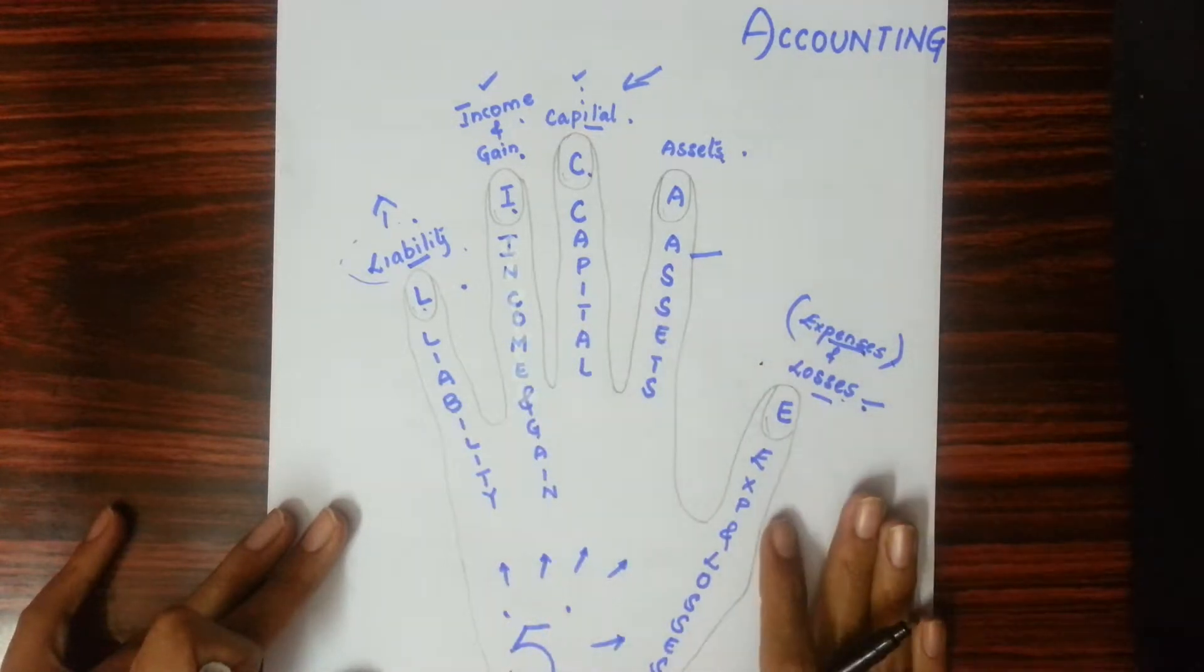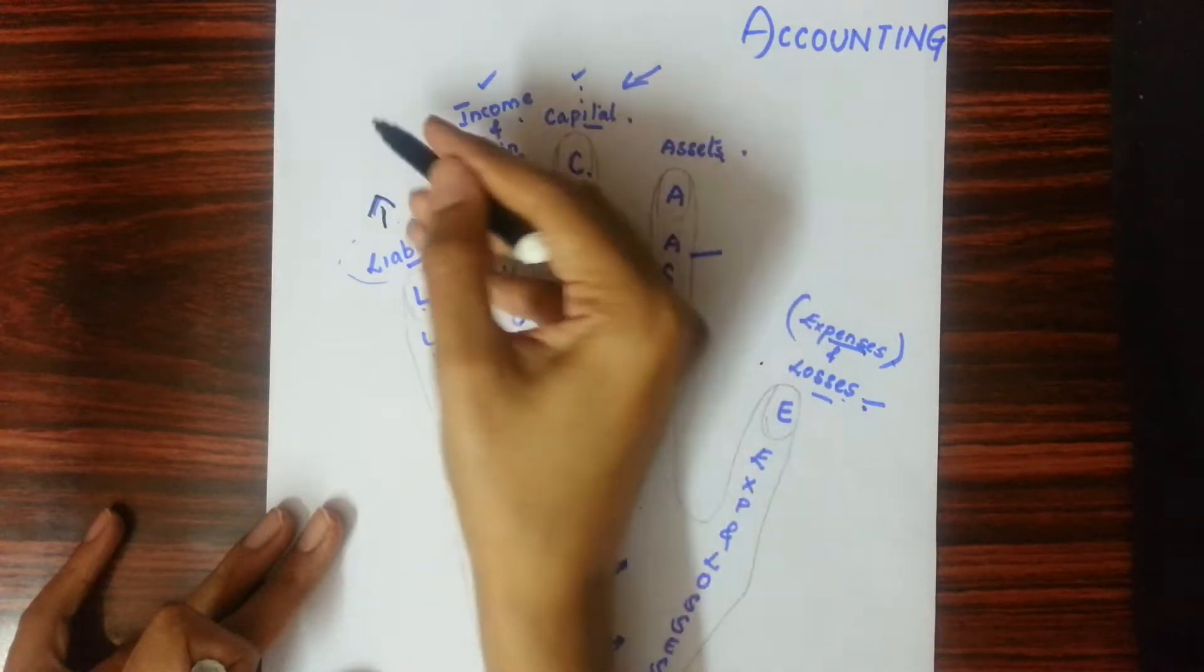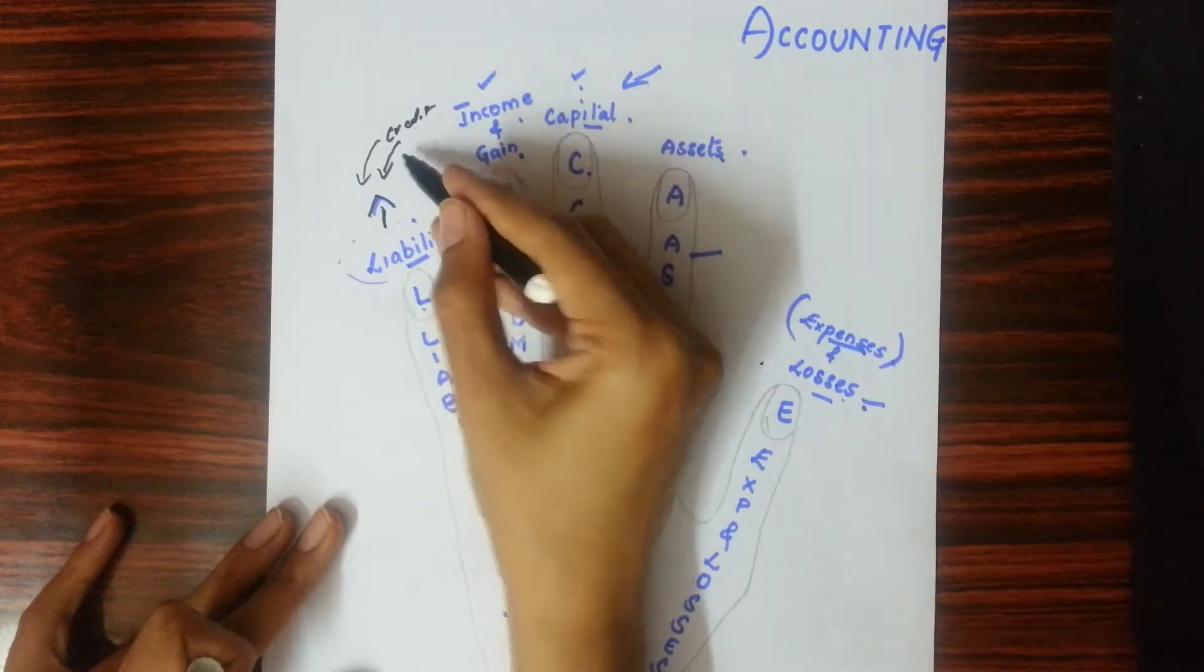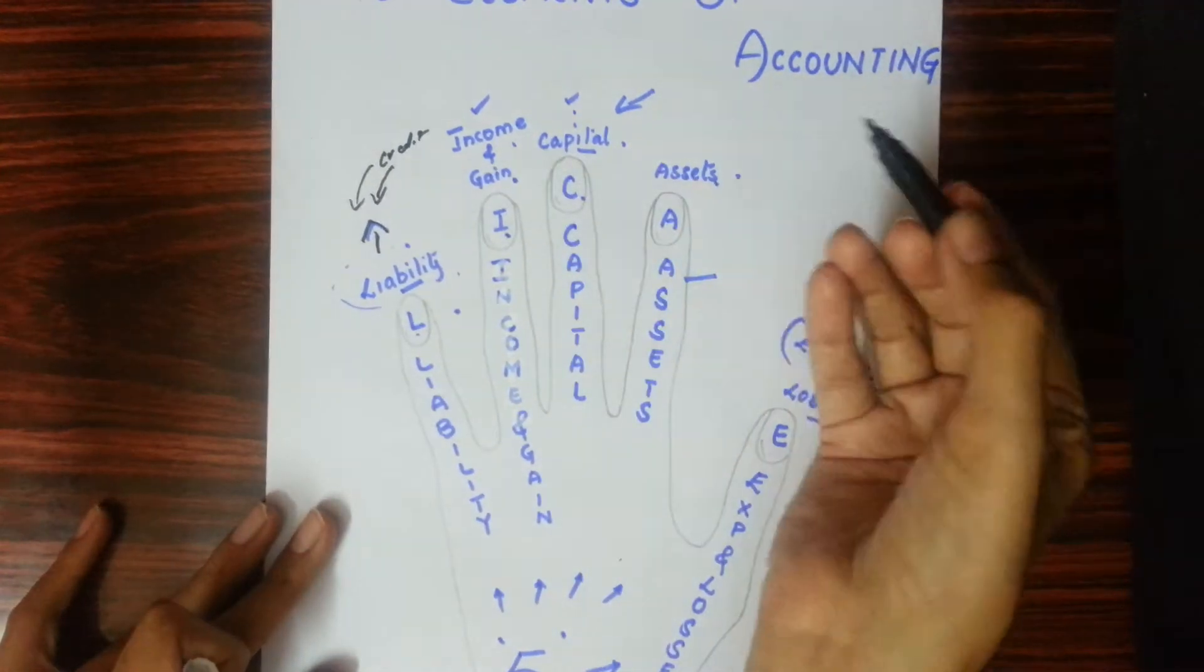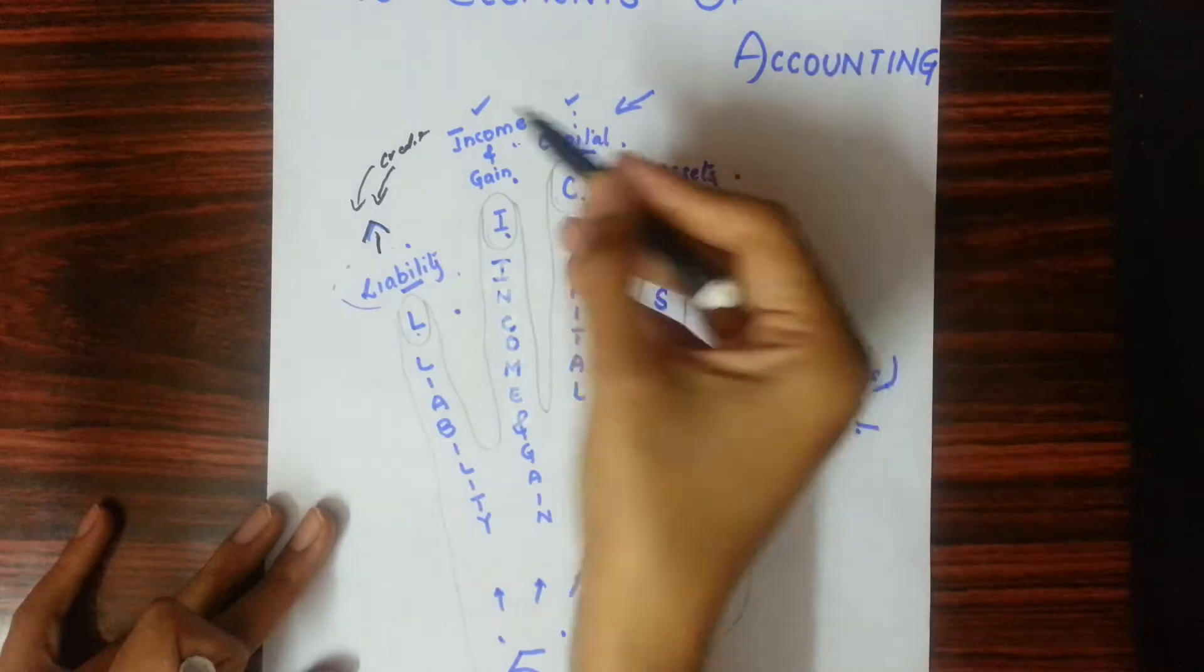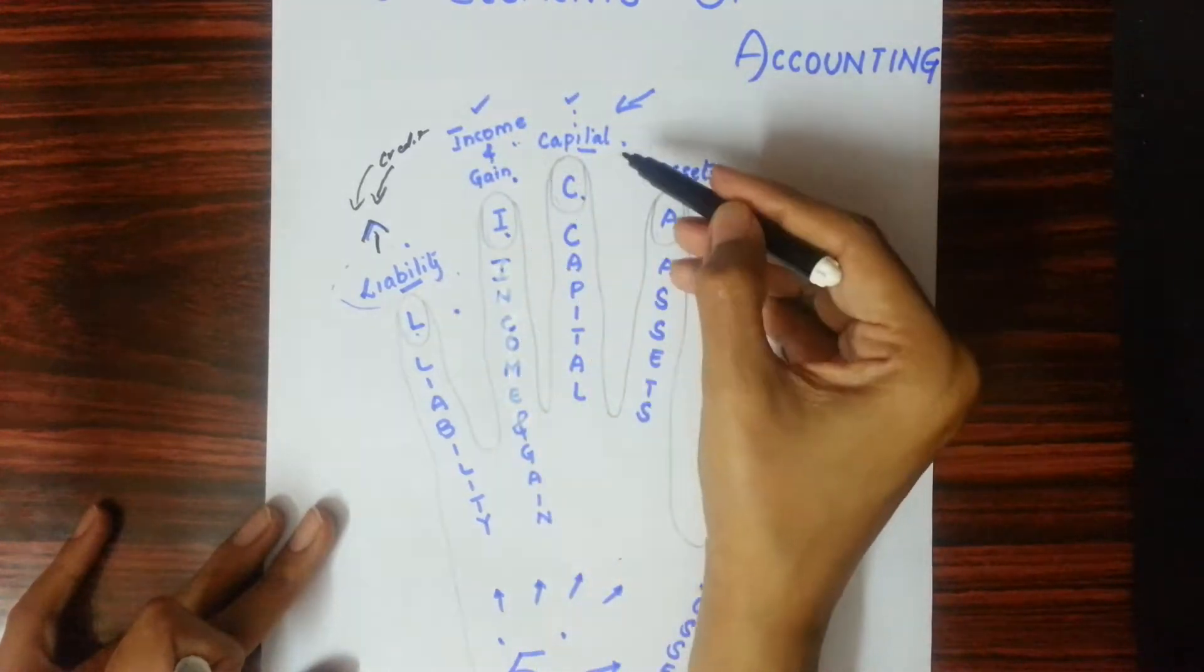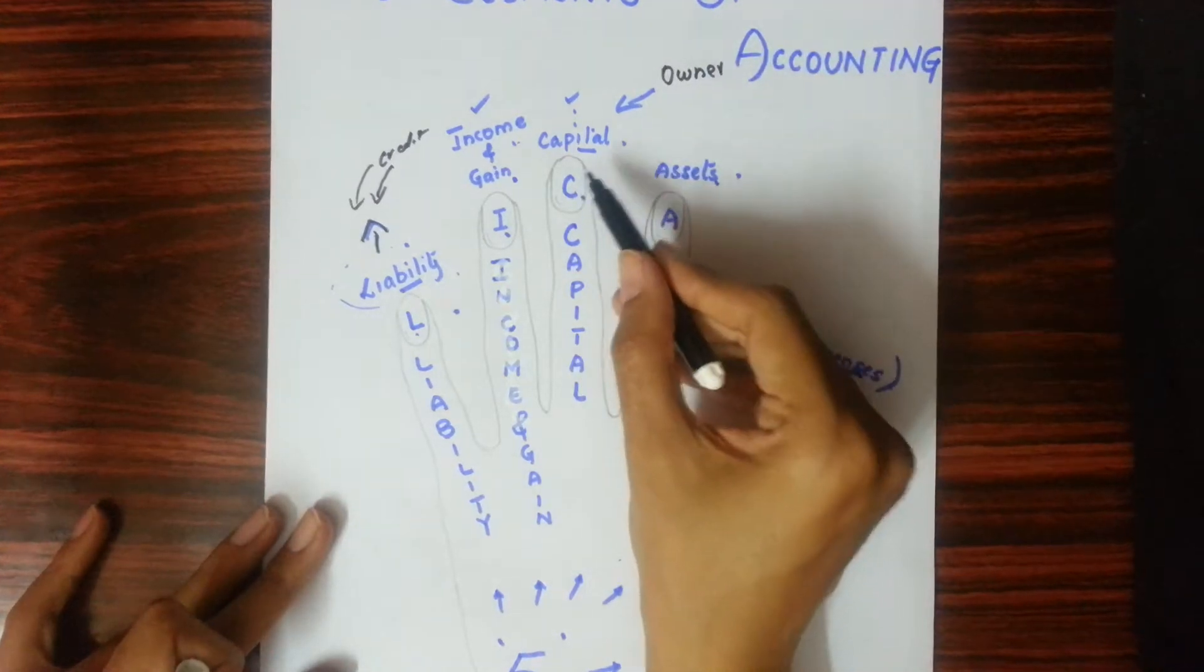Liability - whatever debt you have, like you borrowed some money from someone, or you borrowed something from someone on credit, you have to pay them. That becomes your liability. Income and gain - whatever product you make, the profit you get from it. Or if you invest in something, whatever interest you will get from it, or if you bought someone's shares, the dividend that will come from it - all these things come under income and gains. Capital - that is what the owner gives you to start the business. That will be capital.